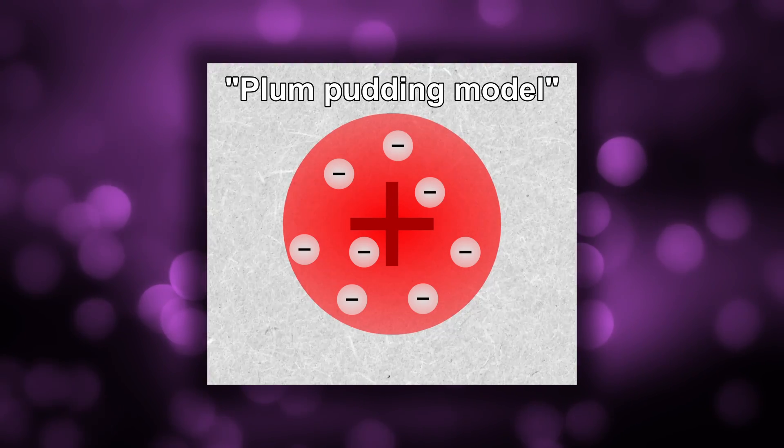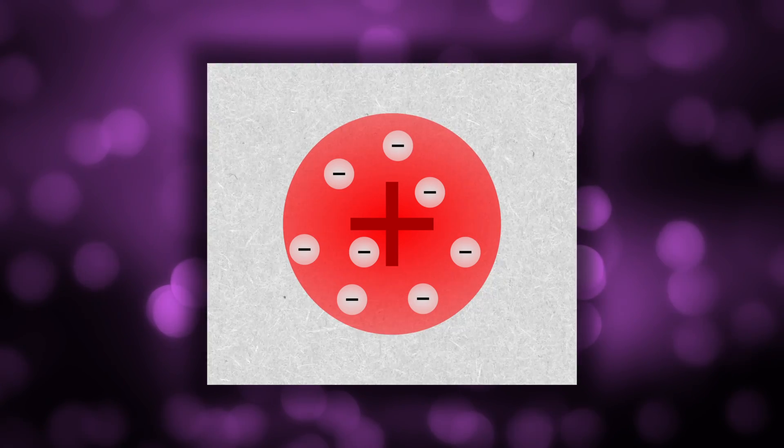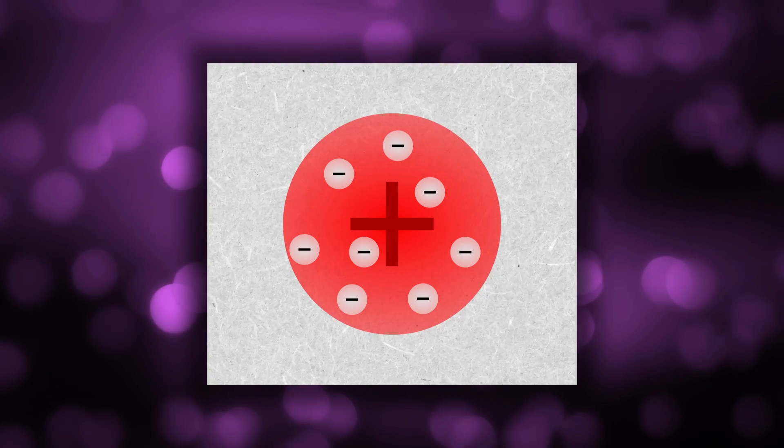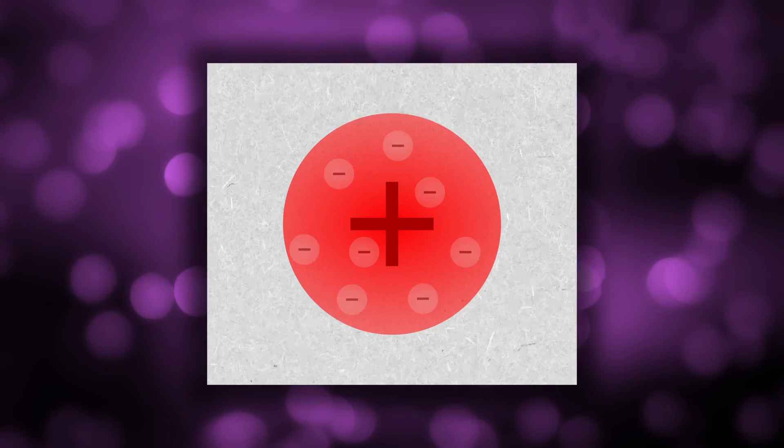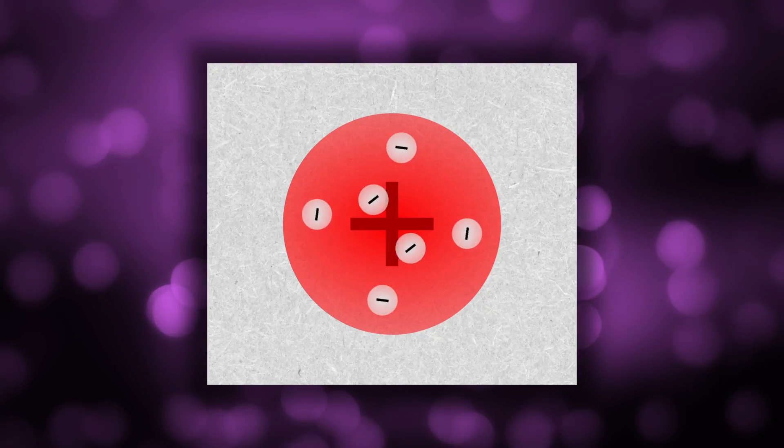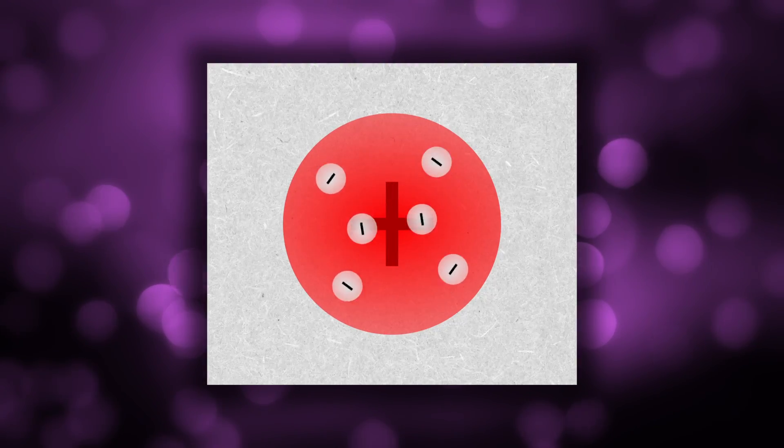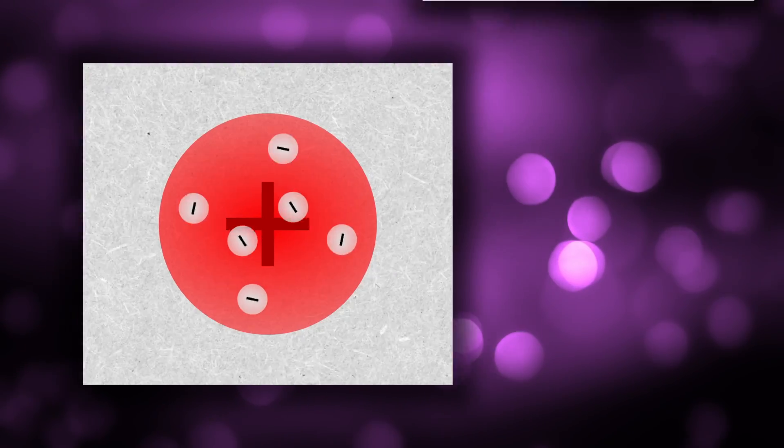This plum pudding model is quite famous nowadays and is often taught in school. However, not many people realized that in this same paper, Thompson also put forward the notion that the electrons could be moving in orbits within the positive matrix. He used a lot of maths to determine this, accounting for all the electrostatic attractions and repulsions involved.